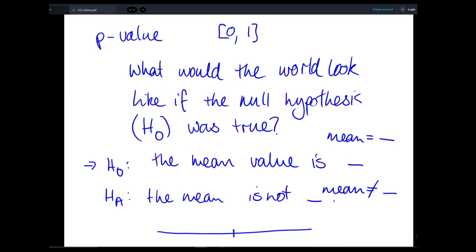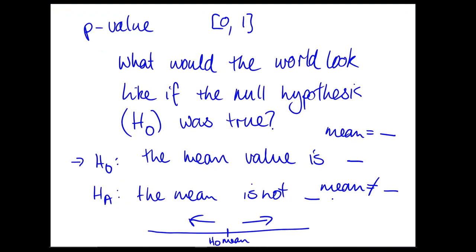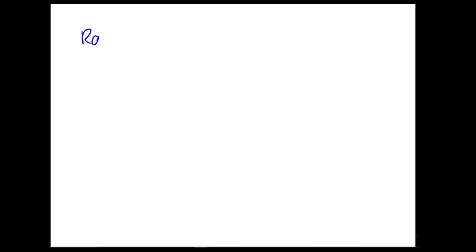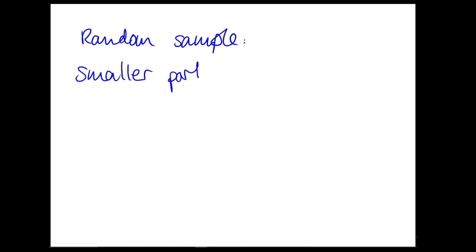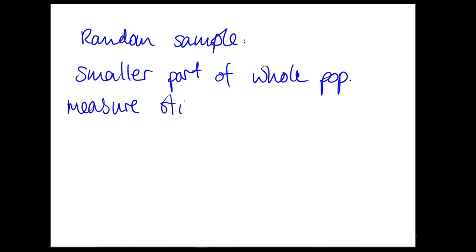You can think about this on the number line. The two-sided hypothesis can be either to that side or that side of the proposed mean under H0, whereas the one-sided hypothesis would just be one side. Because we can't measure the whole population — if we could, we wouldn't need to do this — we take a random sample, some smaller group of individuals or objects, measure the statistic on that, and attempt to infer something about the whole population. So you're looking for deviations from the null hypothesis within that group.